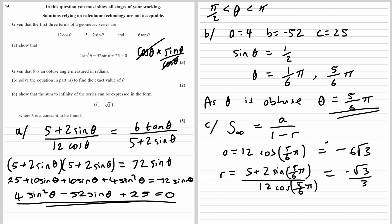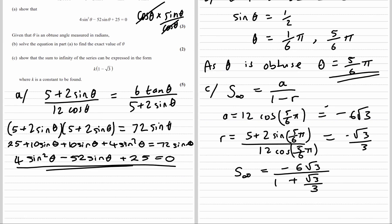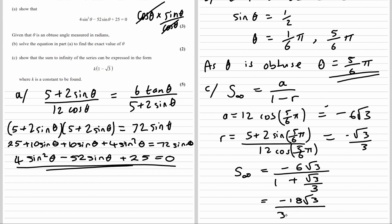So the sum to infinity is negative 6 root 3 over (1 minus r), which is 1 minus (negative root 3 over 3), so 1 plus root 3 over 3. It's not in the right form yet, so we multiply everything by 3 to get rid of the over 3: that gives negative 18 root 3 over (3 plus root 3).